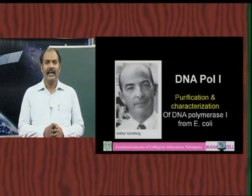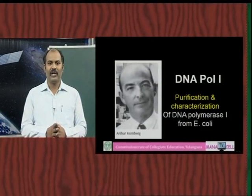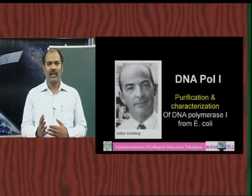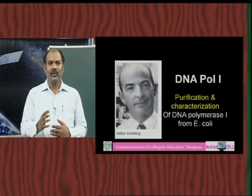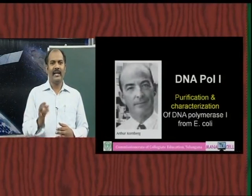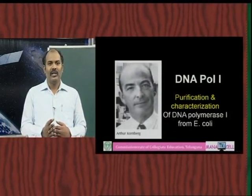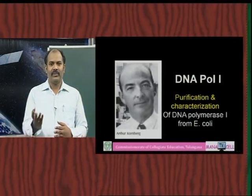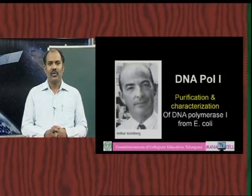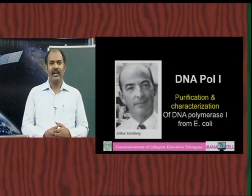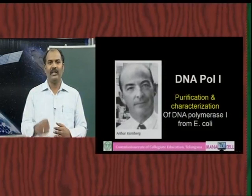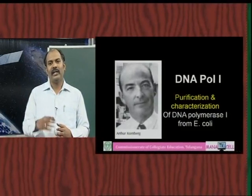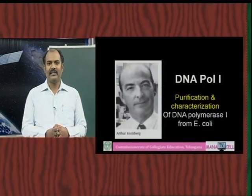DNA polymerase was first discovered by Arthur Kornberg in E. coli. He purified and characterized it, naming it DNA polymerase 1. It is involved in polymerization activity as well as repair mechanisms. Later, other types were discovered: DNA polymerase 2 and DNA polymerase 3.